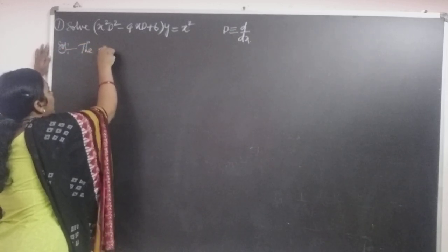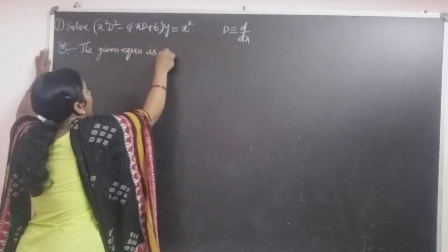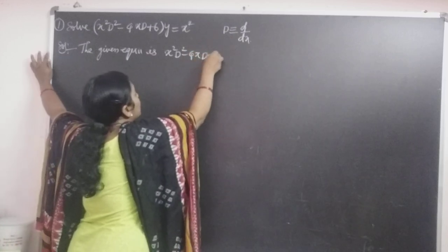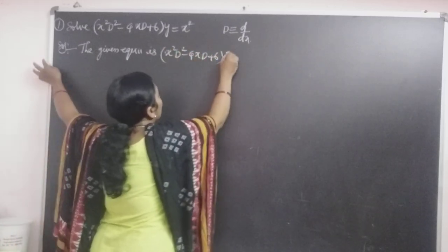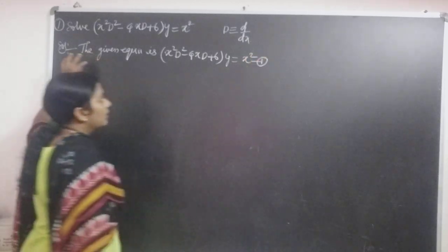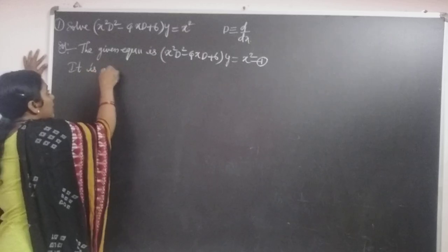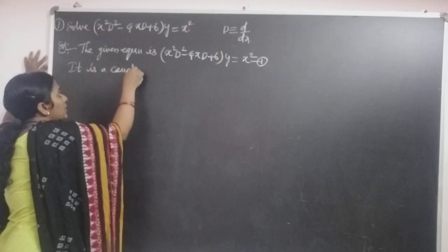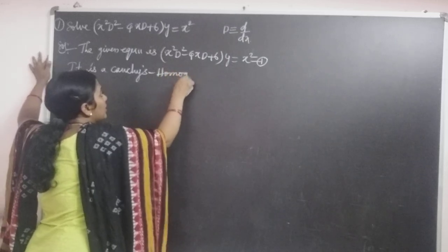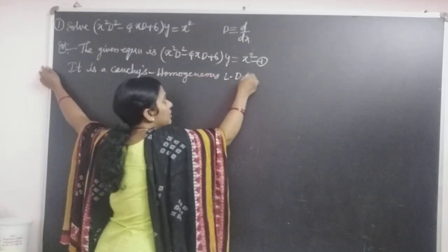The given equation is x squared D squared minus 4xD plus 6 into y equal to x squared. Let it be equation 1. This equation 1 is a Cauchy's homogeneous linear differential equation.